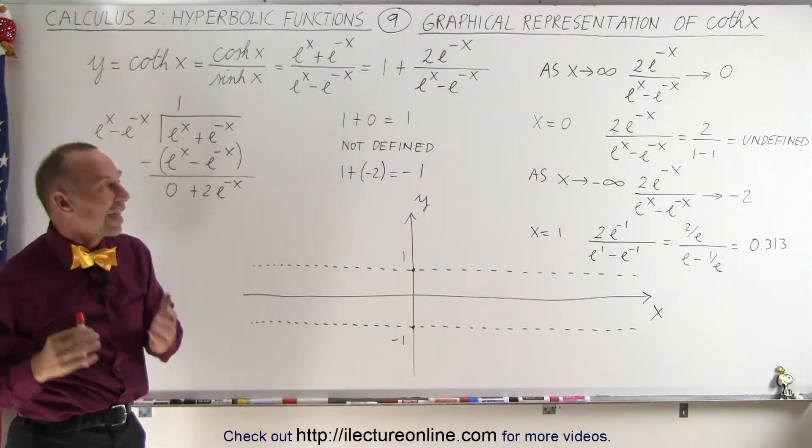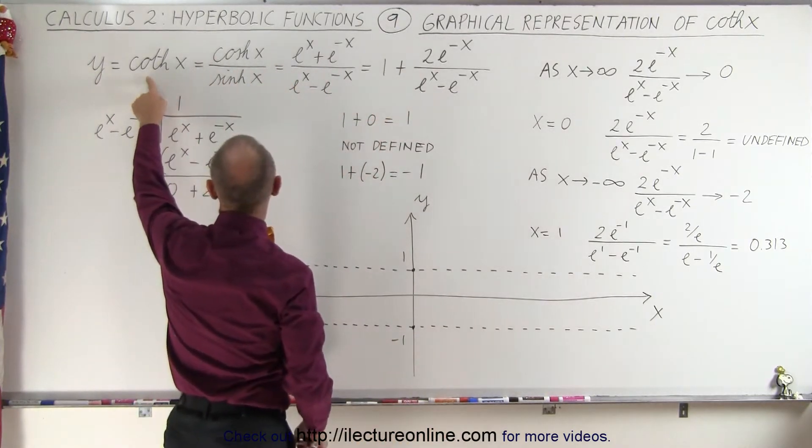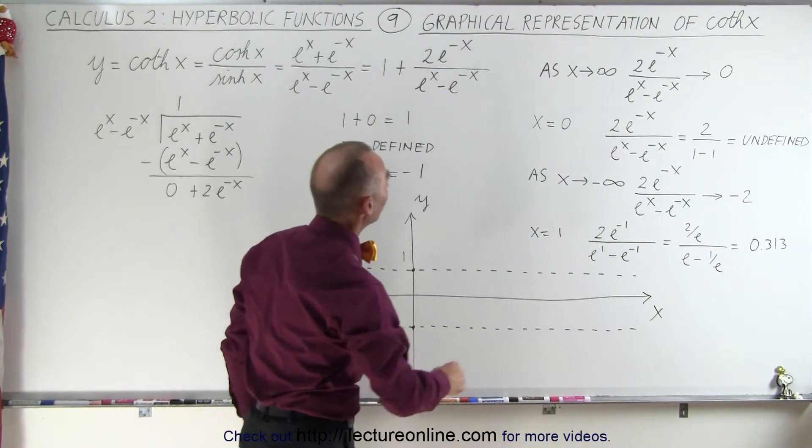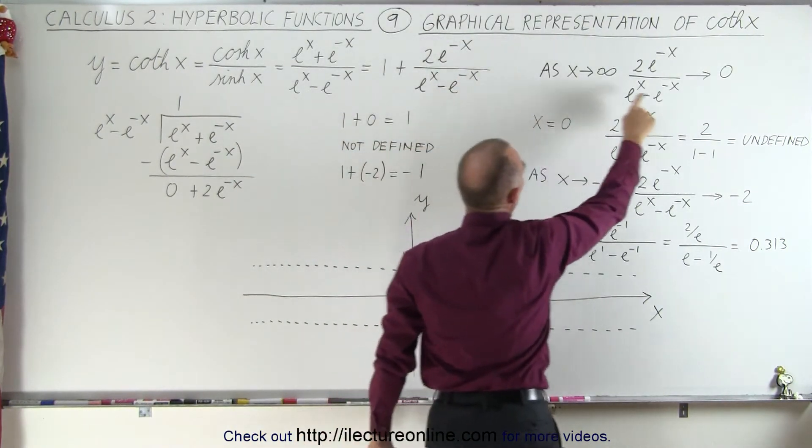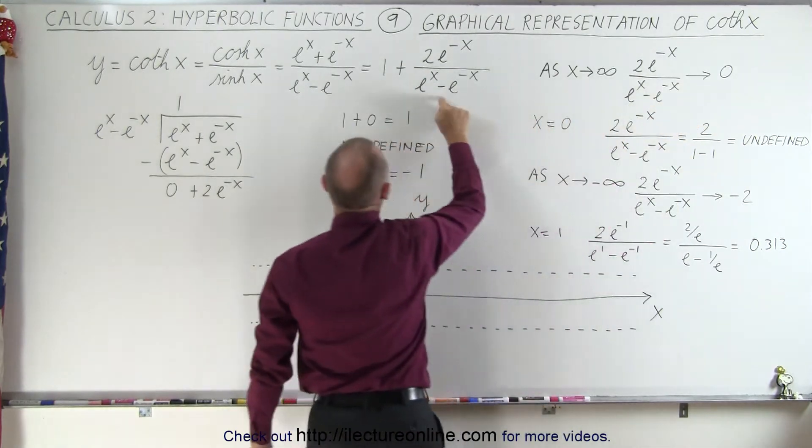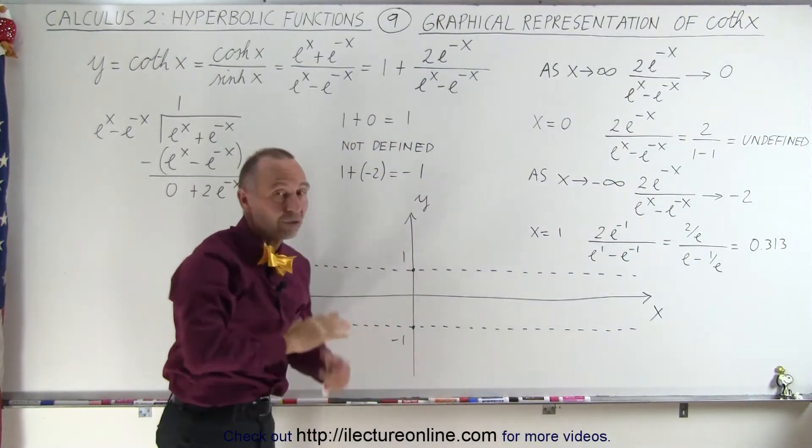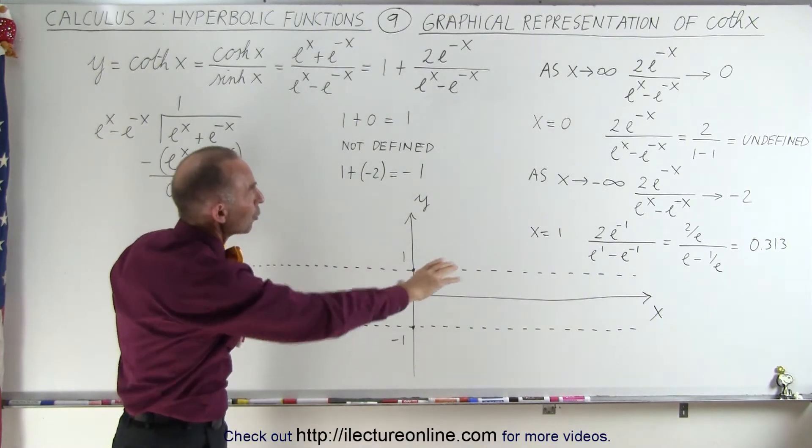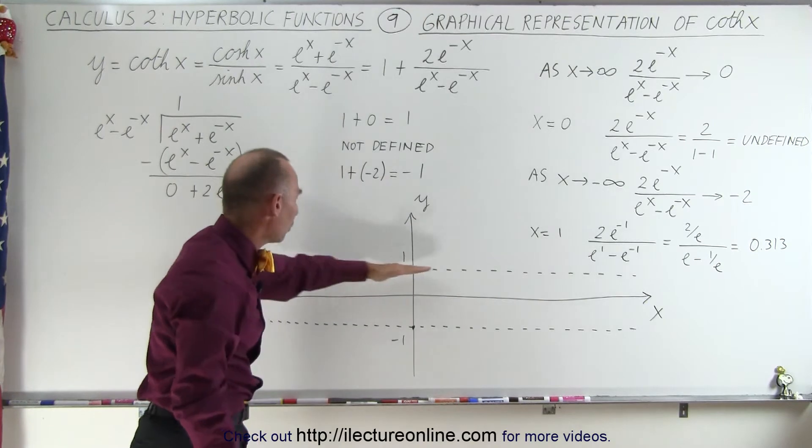When we evaluate this representation of the hyperbolic cotangent, we can see that as x approaches infinity, this fraction will approach 0. So 1 plus 0 gives us 1, which means as x approaches infinity, the function will approach 1. We draw an asymptotic line at y equals 1.